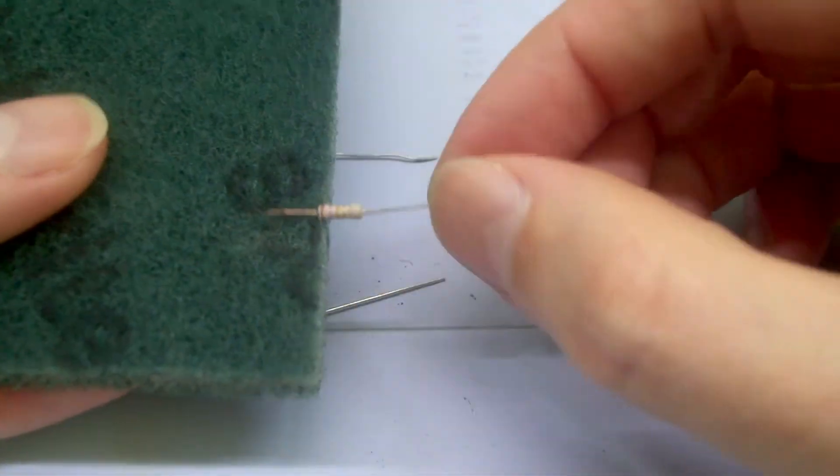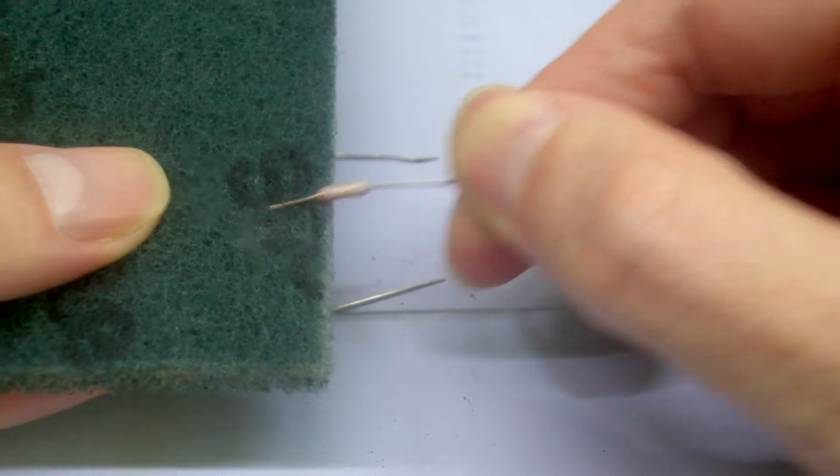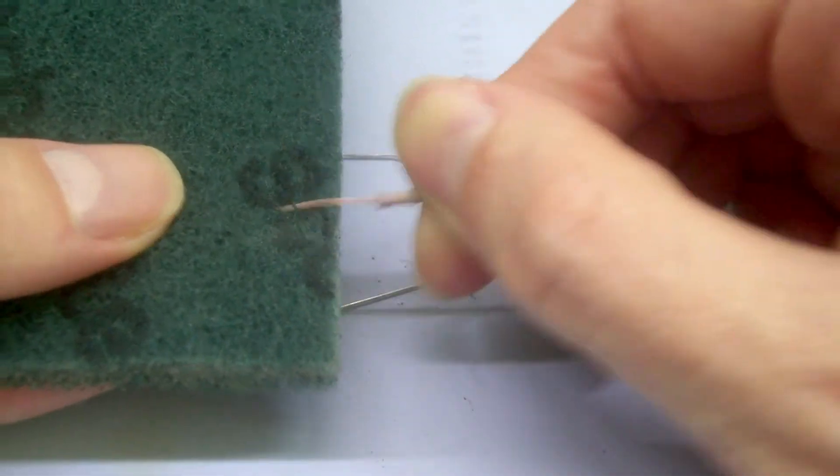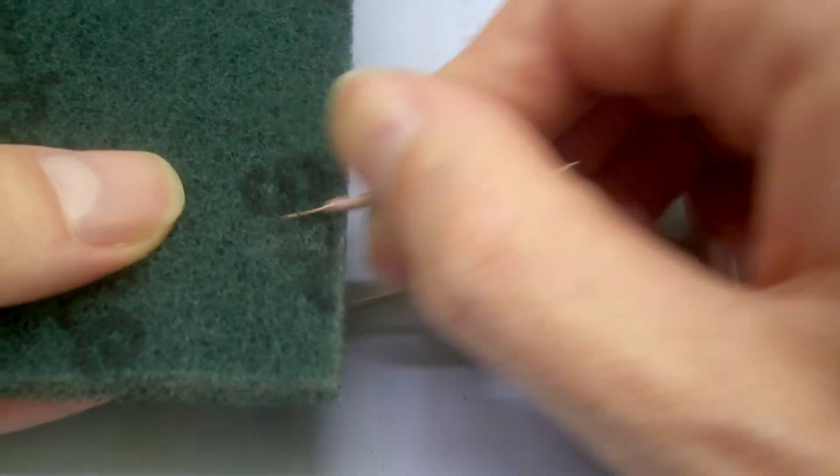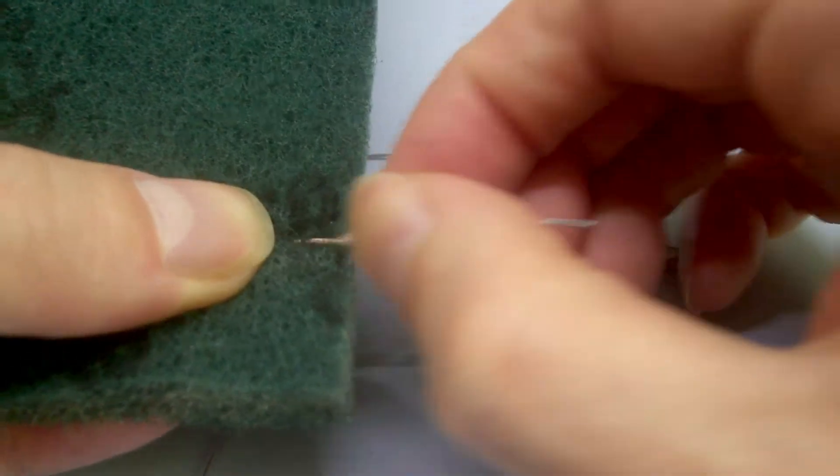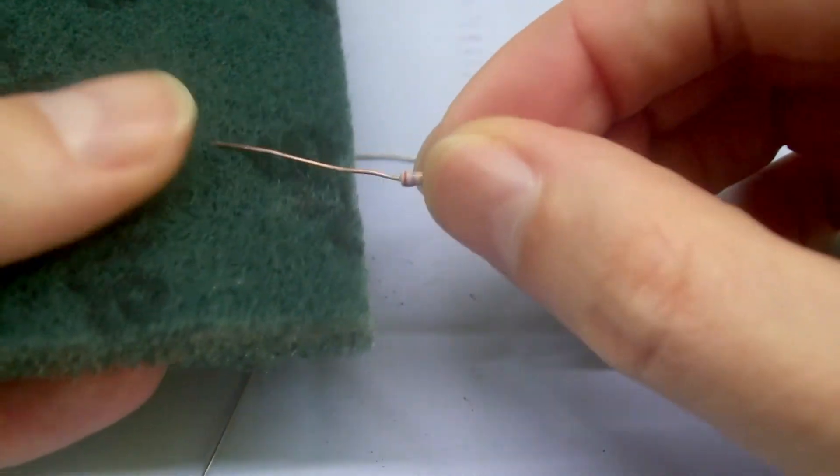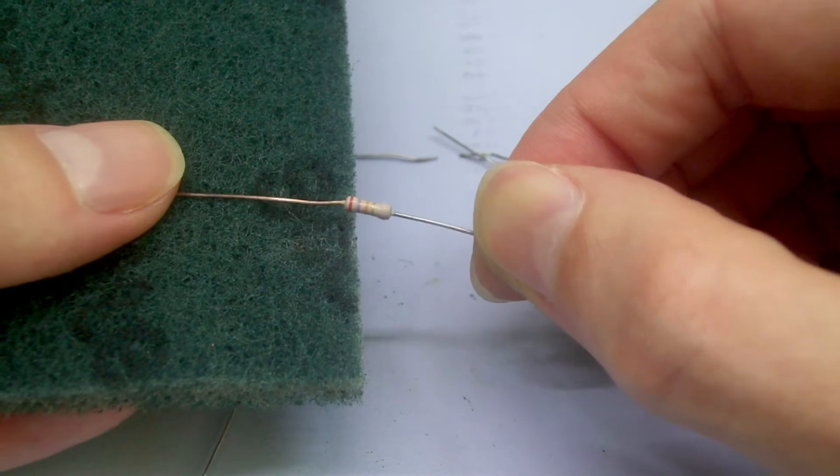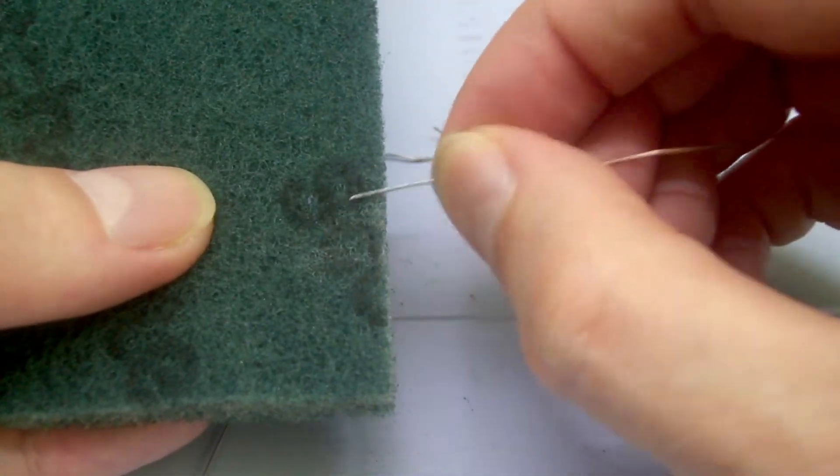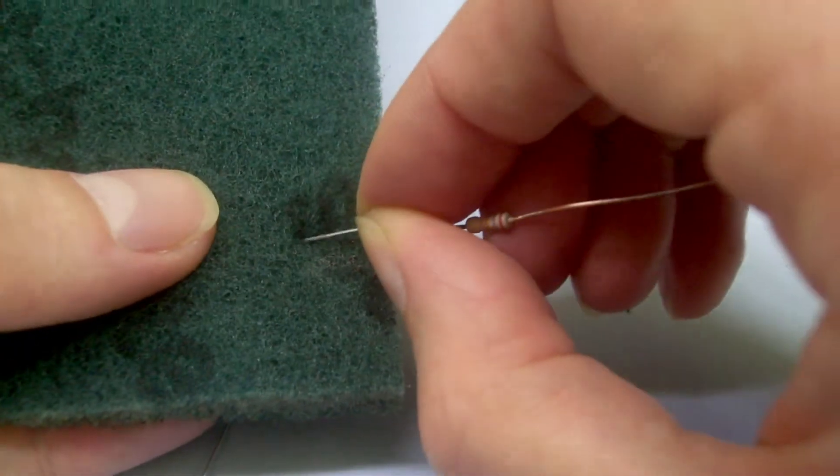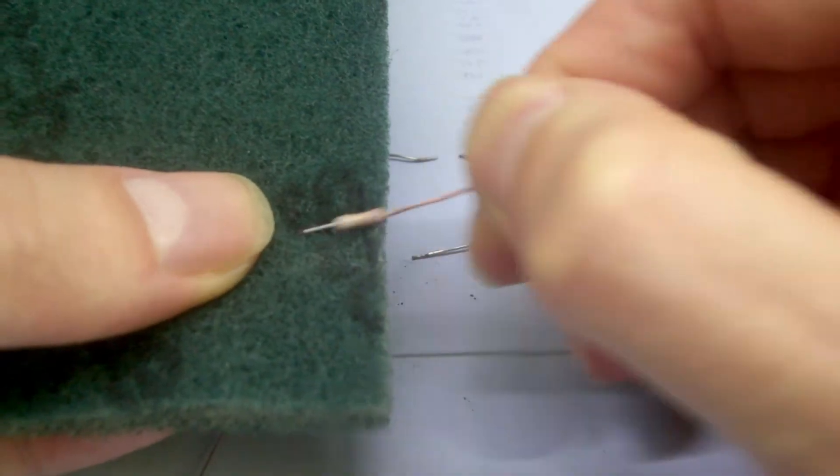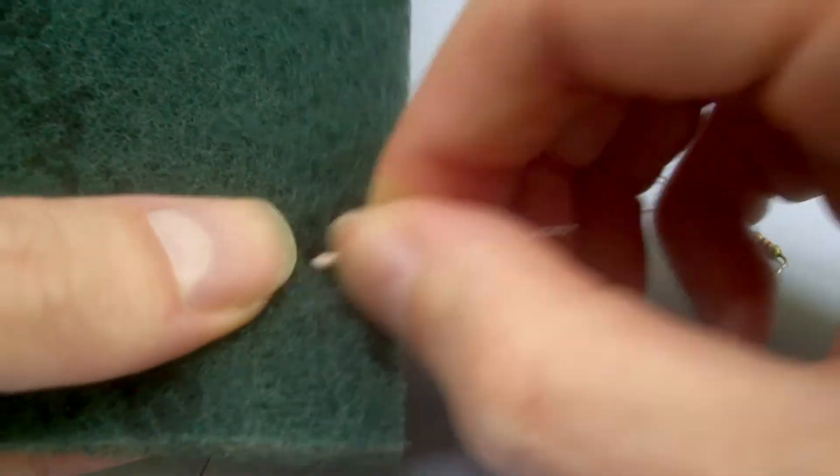But anyway, we can still clean that up just as well with this. Just stuff it in the Scotch-Brite pad and twirl it around. You can rotate it as you do it. That'll also help. Or you can hold the pad and put some pressure on it too. But we can see that it's coming out very shiny and it's basically perfectly fine. So I can just tin that afterwards.